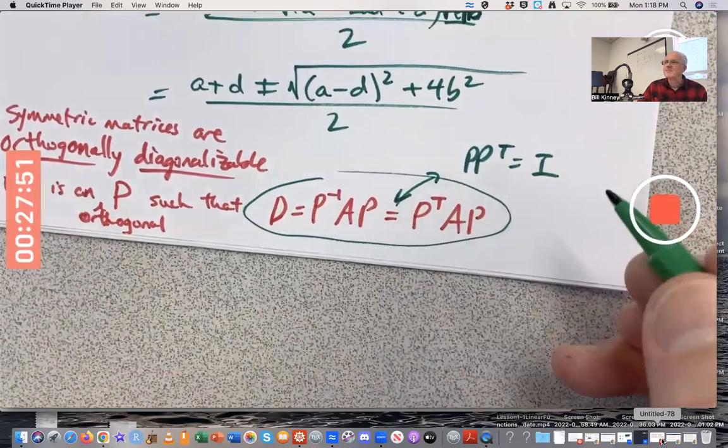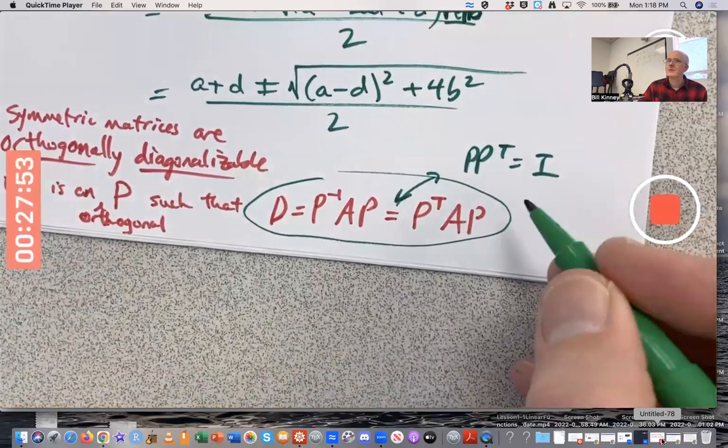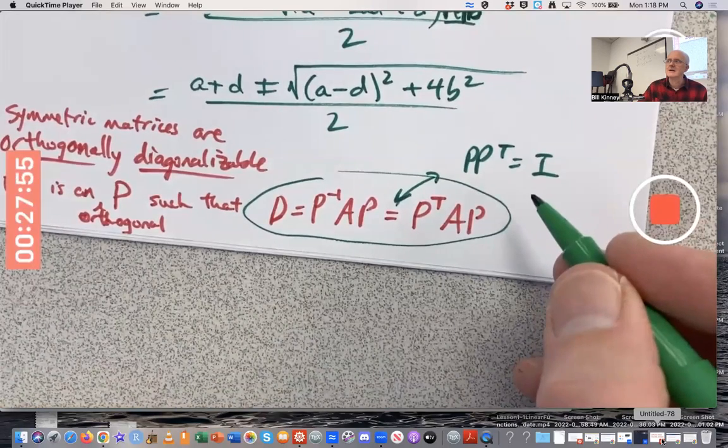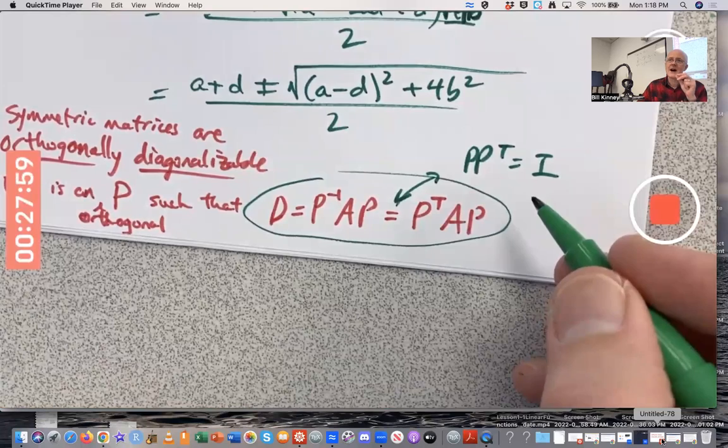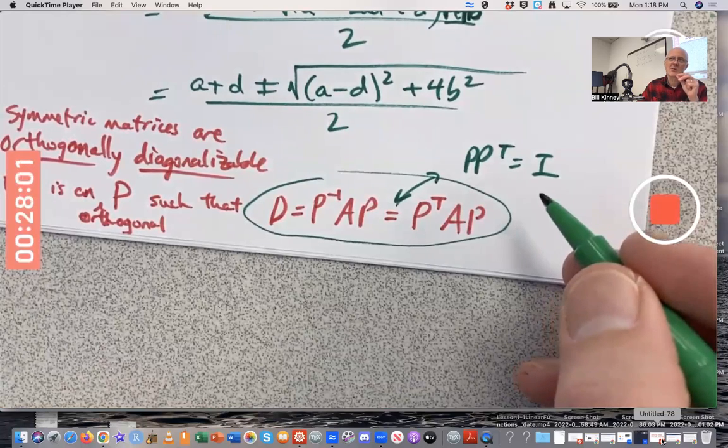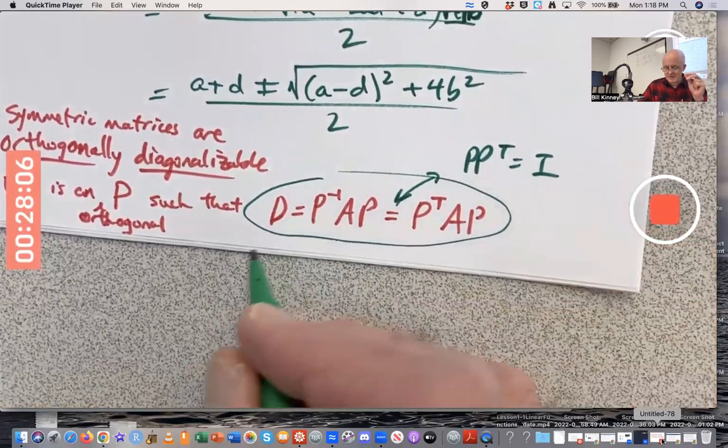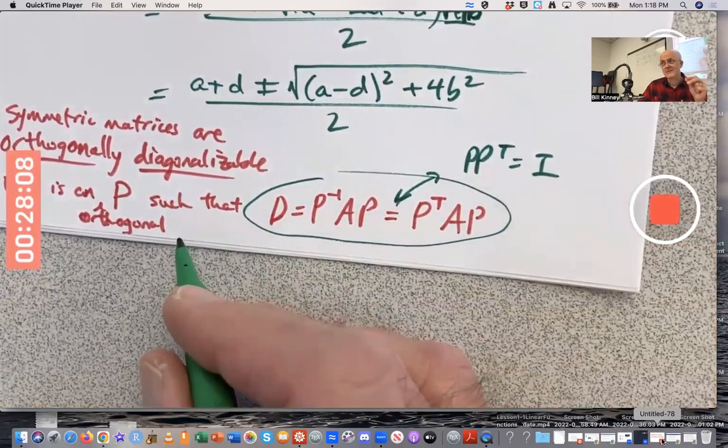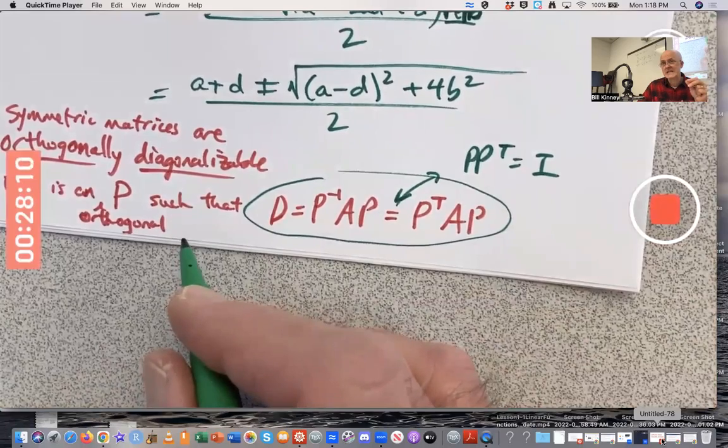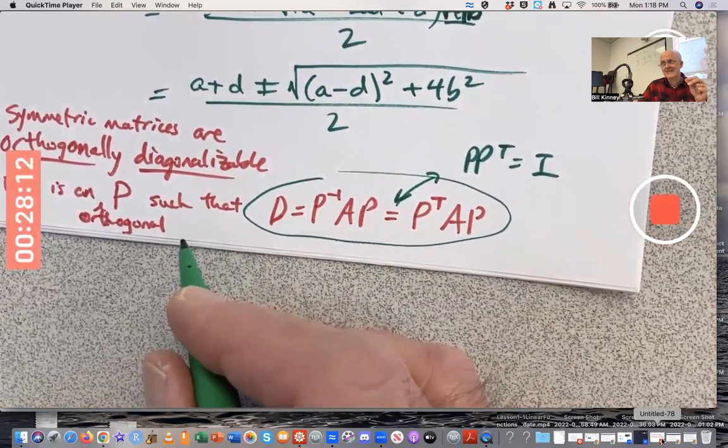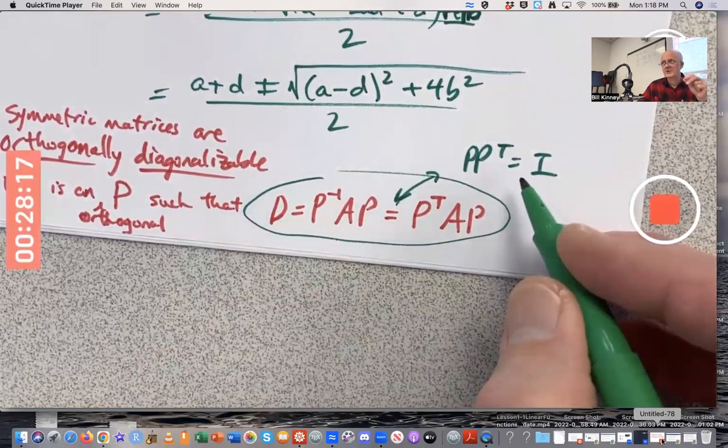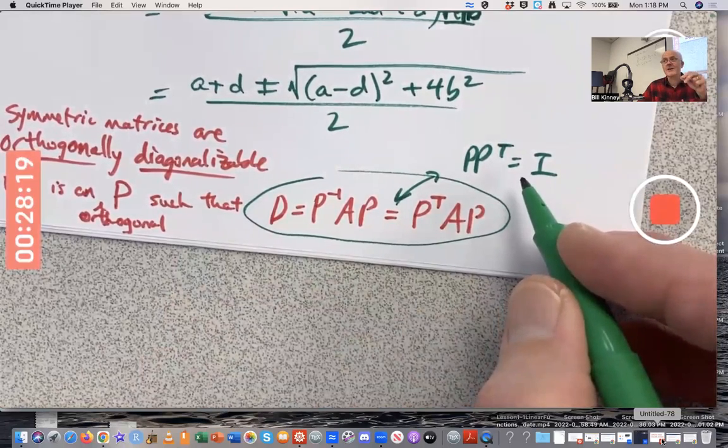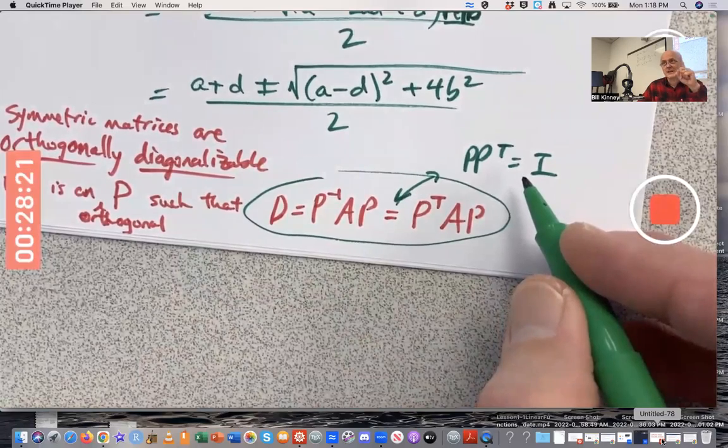But why would that happen? It happens whenever the columns of P, there's a little twist. Whenever the columns of P are orthonormal vectors, which means it probably would be better to call P an orthonormal matrix instead of an orthogonal matrix, but tradition. This kind of thing is going to happen whenever the columns of P are orthonormal vectors. What does that mean? It means they're orthogonal and also normal. They have unit length.